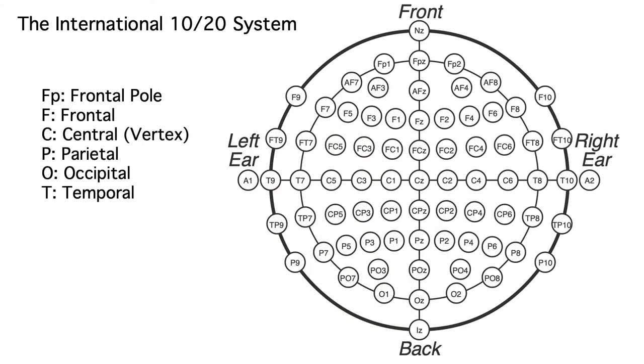Each electrode name begins with one or two letters indicating the general region of the brain, such as FP for frontal pole or O for occipital. These letters can be combined for in-between regions, such as PO for electrodes near the parietal occipital border. The letters are followed by a number.